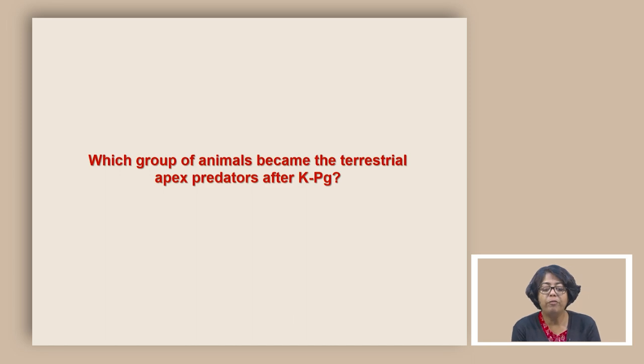Which group of animals became the terrestrial apex predator after KPG? After KPG extinction, the groups that became the terrestrial apex predator were the birds. These were large flightless birds which filled up the niche which was vacated by non-avian dinosaurs. It is only after quite some time during Eocene where we start to find the apex predators as carnivorous mammals. During this entire period the apex predators on land were primarily the birds.